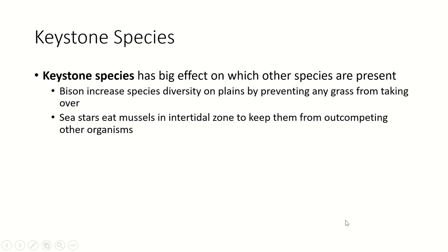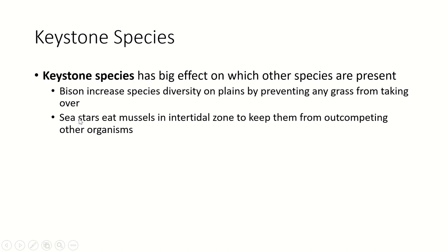An organism that has a big effect on other organisms around it is called a keystone species — just like the keystone in an arch, if you remove it the whole arch falls down. A keystone species, if removed, can cause the whole ecosystem to fall apart. Bison are a keystone species for prairie grasslands — returning bison to prairies greatly increases the number of other species that can exist there. They prevent any one kind of grass from taking over, and by walking around and reforming the ground they create niches for other organisms.